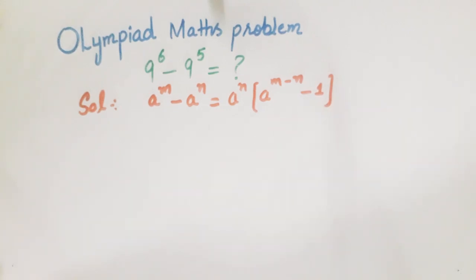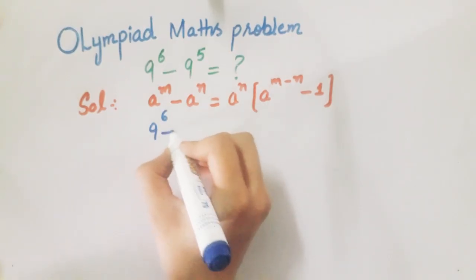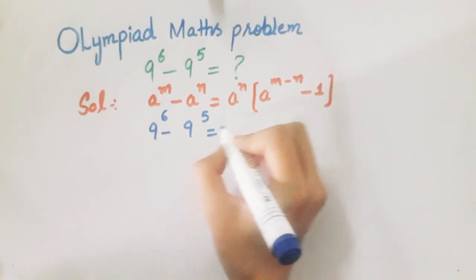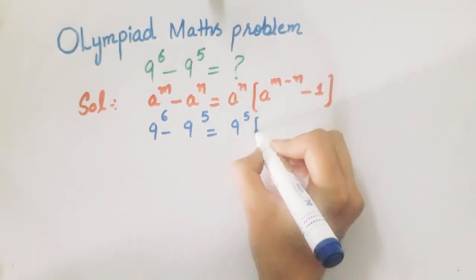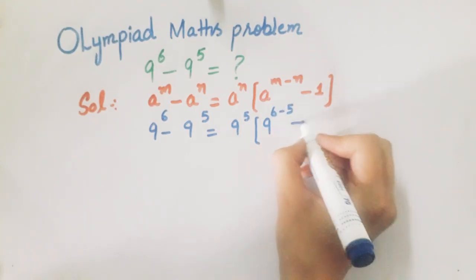We will apply this to our question: 9^6 - 9^5. We can take 9^5 as common because it's smaller. So the remaining is 9^(6-5-1).